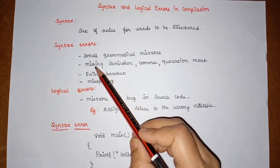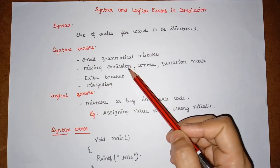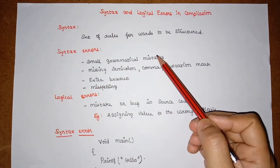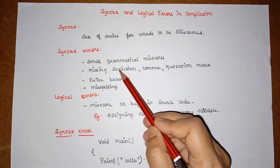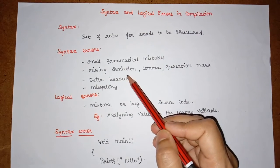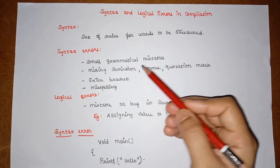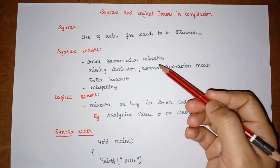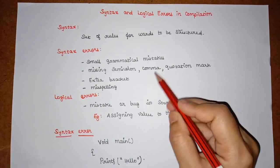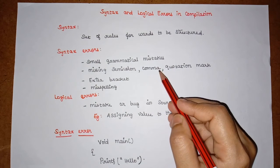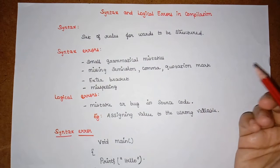A syntax error can occur when we have small grammatical mistakes in a program while writing it. Also, if we are missing a semicolon at appropriate places — wherever a semicolon is necessary and we skip it — we will get a syntax error at that point. Similarly, wherever a comma is required and we miss it, we will be notified with a syntax error.